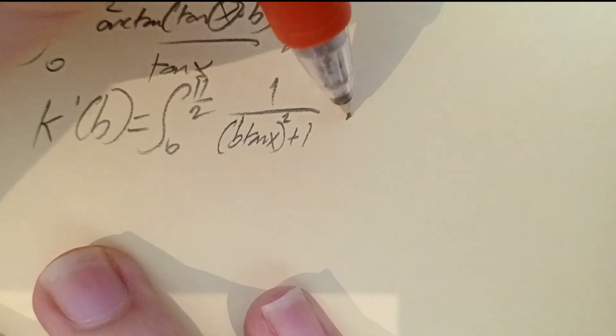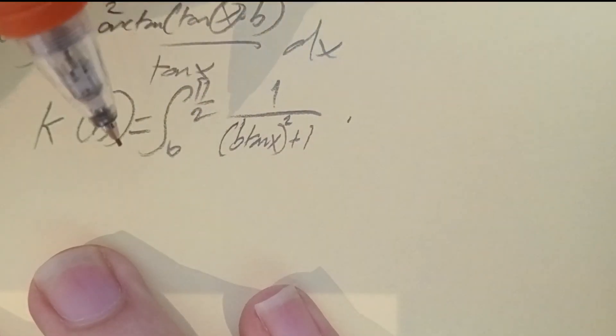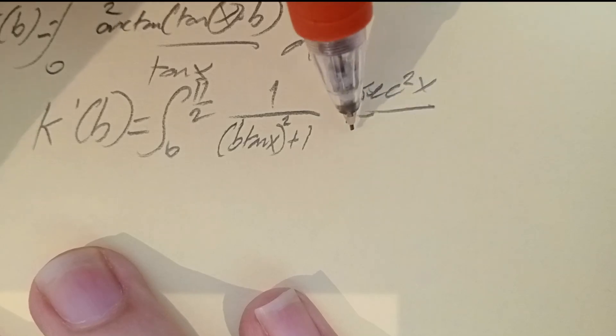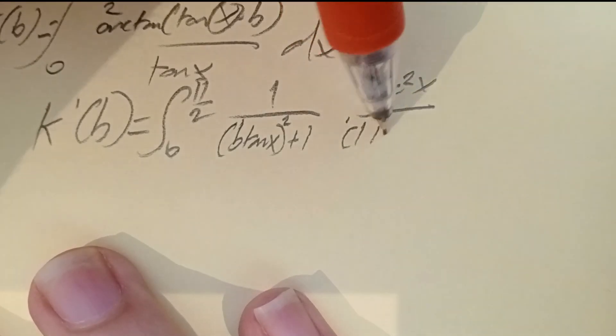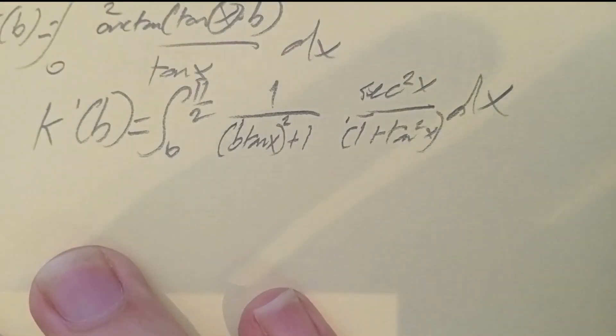K'(b) equals the integral from 0 to pi/2 of the derivative of arctan(b tan x) with respect to b. The derivative of arctan gives 1 over (b squared tan squared x plus 1), times tangent x. I also multiply top and bottom by secant squared x, which equals 1 plus tan squared x, so I've just multiplied by 1. Now let's do a substitution: let u = tan x, so du = secant squared x, dx.